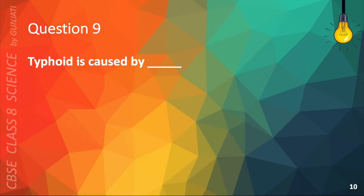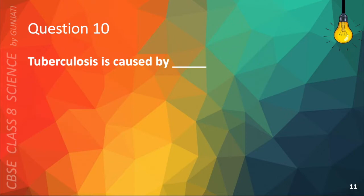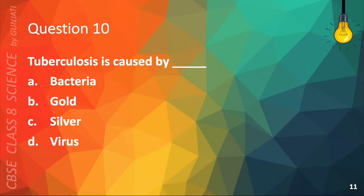Question 9. Typhoid is caused by: A. Bacteria, B. Soil, C. Algae, or D. Vitamin. The correct answer is A. Bacteria. Question 10. Tuberculosis is caused by: A. Bacteria, B. Gold, C. Silver, or D. Virus. The correct answer is A. Bacteria.